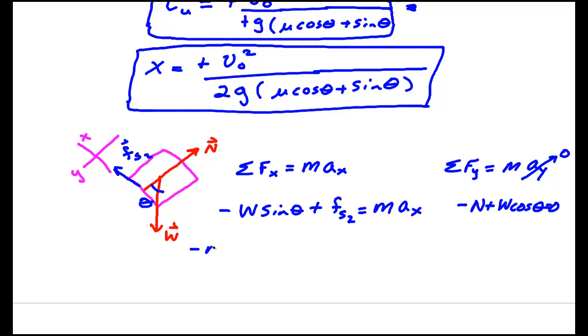This gives us minus mg sin θ plus μN equals maₓ. And this equation over here, we solve for N, gives us mg cos θ.